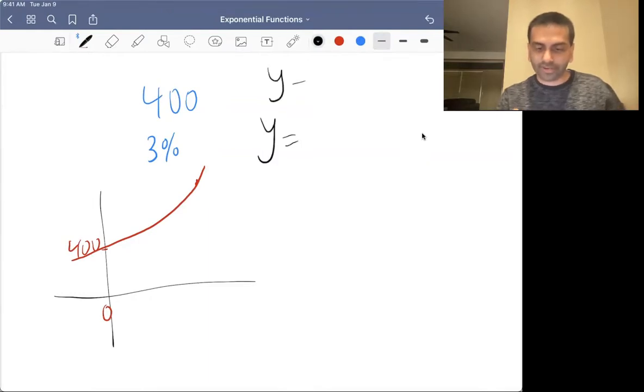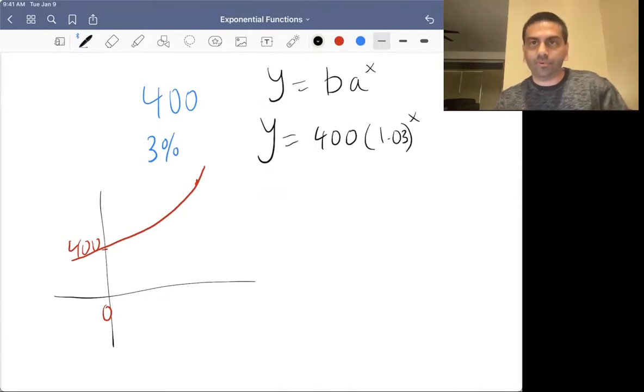So using the model B, A to the x, the B, the initial value is 400, and the A is, in this case, 1.03, and then to the power of x here.